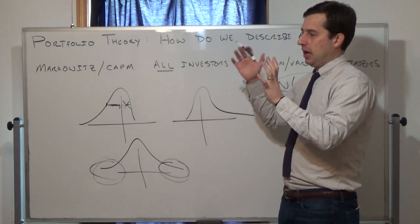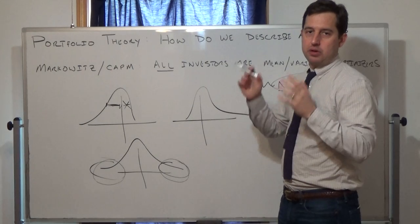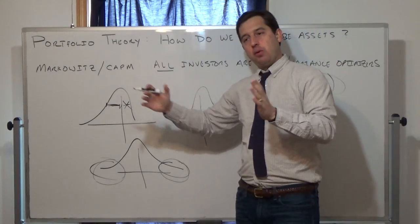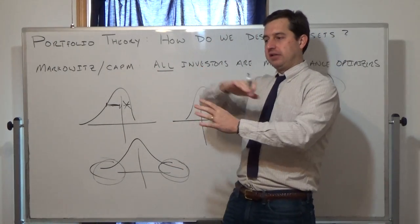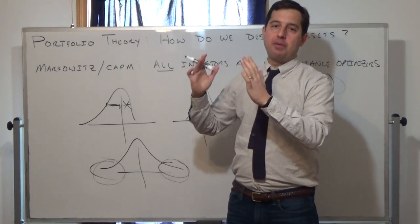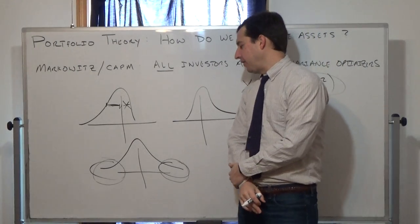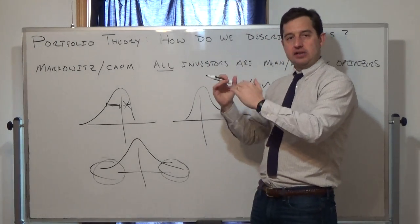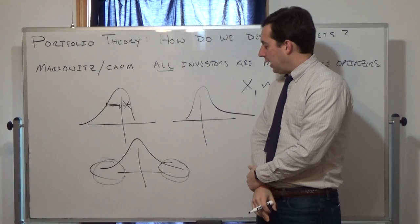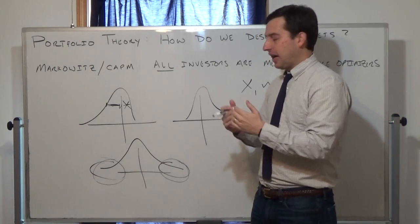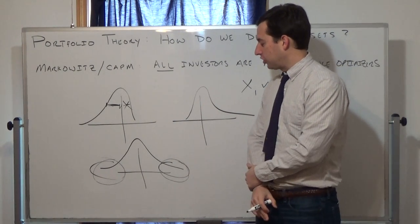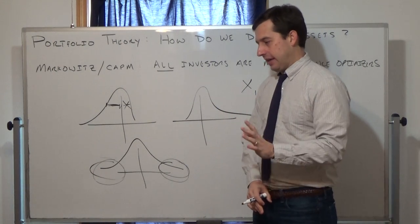Under this video in the description I've linked an interactive web application where you can input a stock and see the normal distribution plotted against the empirical distribution — essentially a histogram of what actually happened over one historical period. The app calculates the mean and variance, plots both distributions, and runs tests for skewness and kurtosis. What you often find is yes, there is significant skewness and kurtosis.